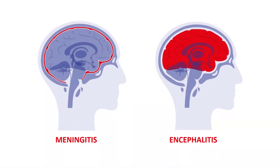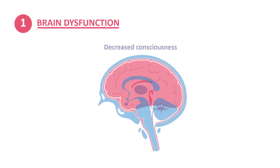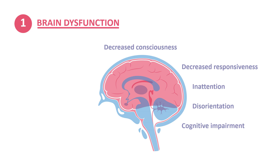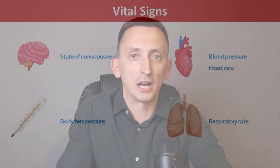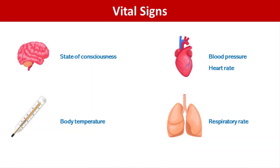Let's start with the obvious. In infections that do involve the brain directly, like encephalitis, there will be signs of brain dysfunction, ranging from a depressed level of consciousness to decreased responsiveness, inattention, disorientation, cognitive impairment, and in later stages, maybe also a focal neurologic deficit like hemiparesis or dysphagia. So this is where we start. We talk to the patient to assess their level of consciousness and we measure their vital signs, just like with any other acute condition.